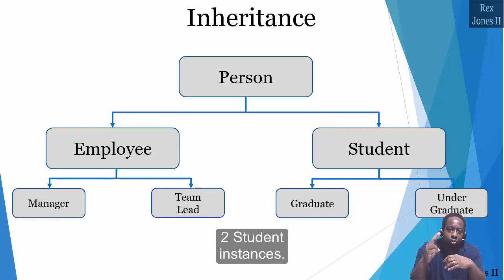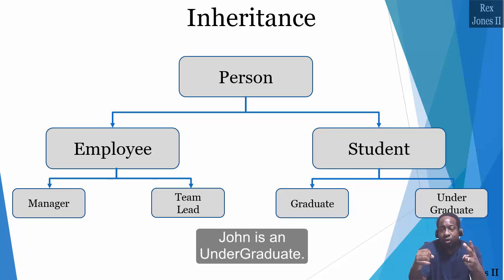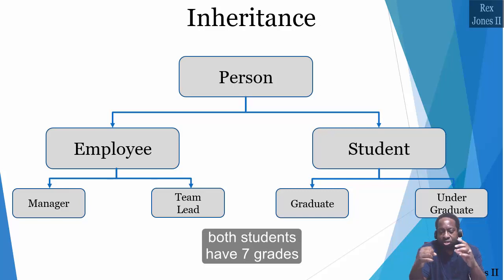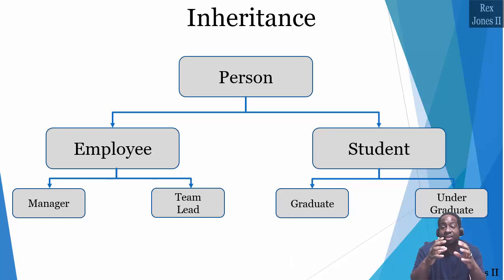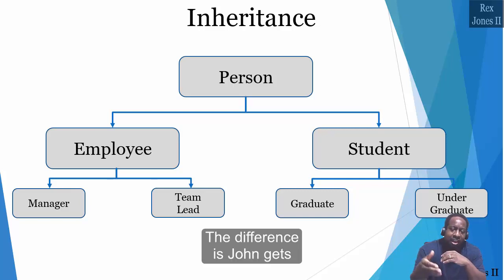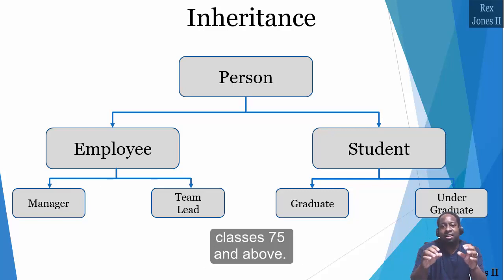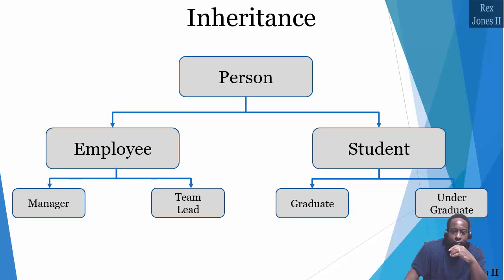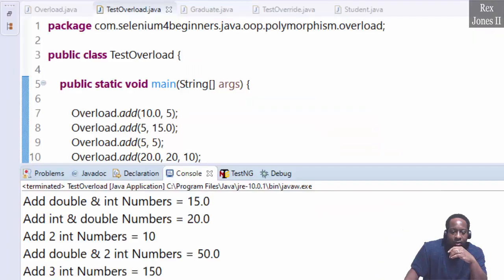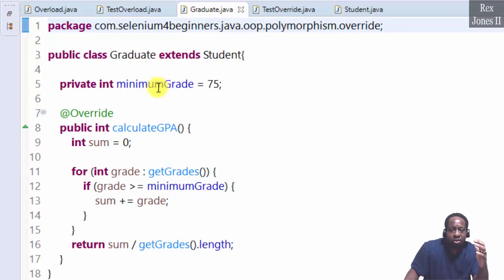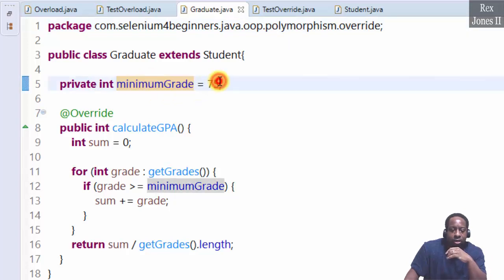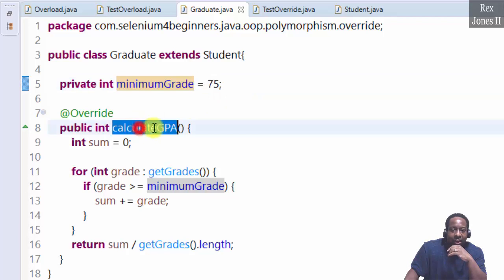Here's the scenario with two instances. We'll imagine both students have seven classes with the same grades for each. The difference is John gets credit for every class, but Jane only gets credit for classes graded 75 and above. We have a field for minimum grade set to 75 and a calculateGPA method.